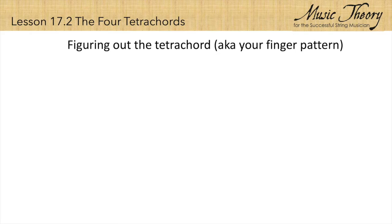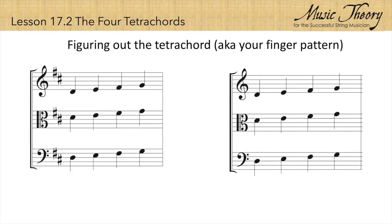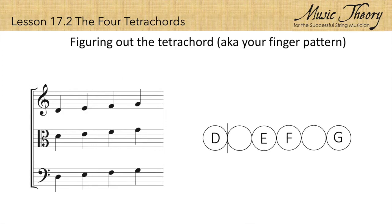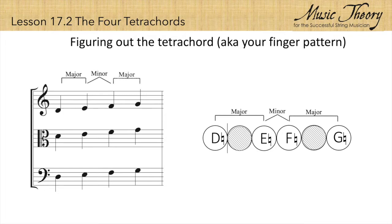Figuring out the tetrachord is one of the most challenging things we do as string players. These two groups of notes look very similar, but are they? A string diagram can be used to help us figure out the sequence of whole and half steps. In this tetrachord, all the notes are natural, so the sequence of seconds goes major, minor, major. This tetrachord is called a D minor tetrachord.